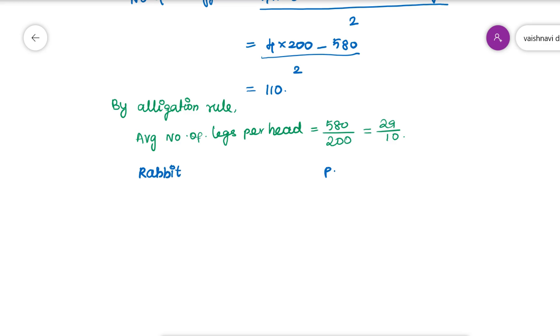For rabbit, it has 4 legs. And pigeon has 2. We know that by allegation method, we can always use only the average value. That is why this 29 by 10. Upon simplifying, what we will get is the ratio of rabbits to pigeons.